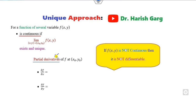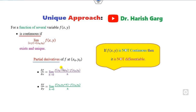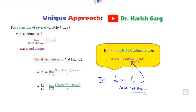To calculate partial derivatives, you can keep y constant, but it is recommended to use the proper limit definition. If the partial derivative with respect to x or y does not exist, the function is not differentiable. To check differentiability: first check continuity, then check partial derivatives. If partial derivatives exist, the function may or may not be differentiable; if they don't exist, it is definitely not differentiable.